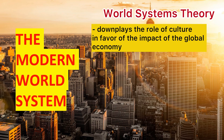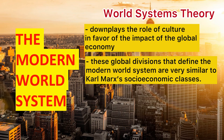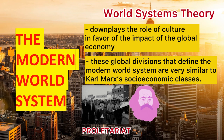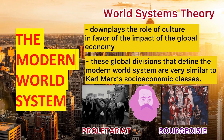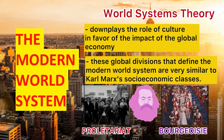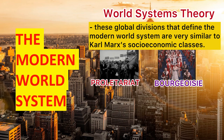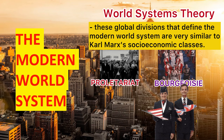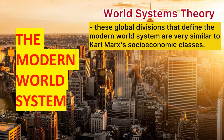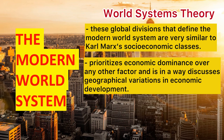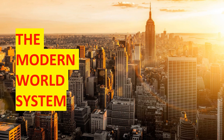The modern world system also downplays the role of culture in favor of the impact of the global economy. The global divisions that define the modern world system theory are very similar to the socio-economic classes conceived by Karl Marx — you have the proletariat and then the bourgeoisie. The world systems theory also divides countries into categories, roughly analogous to our socio-economic concepts of the developed, developing, and least developed parts of the world. The important thing to remember is that world systems theory prioritizes economic dominance over any other factor in discussing spatial variations in economic development.